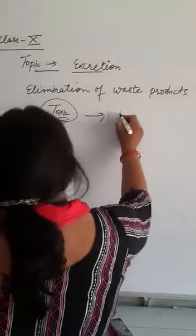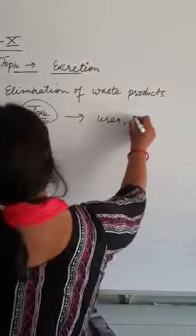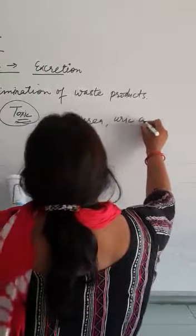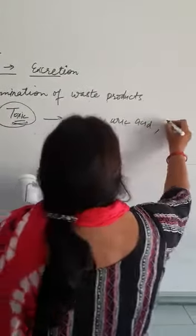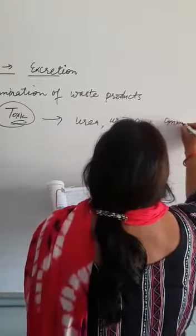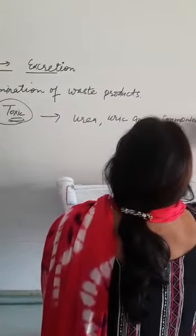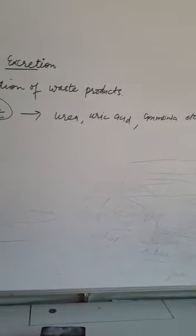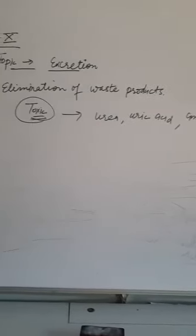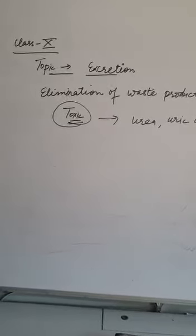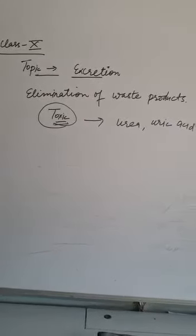Toxic materials are like urea, uric acid, ammonia, etc. Along with these toxic waste products, carbon dioxide is also a waste product, and sweat is also a waste product.